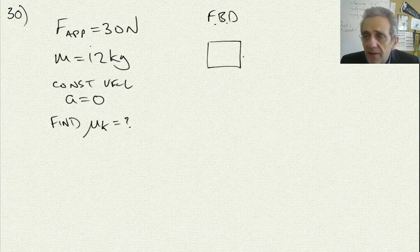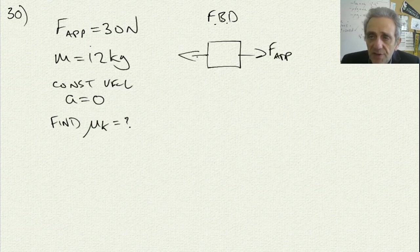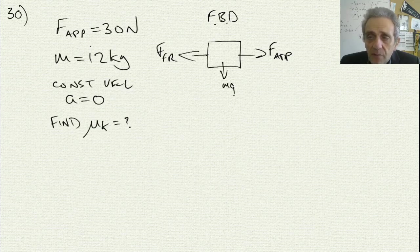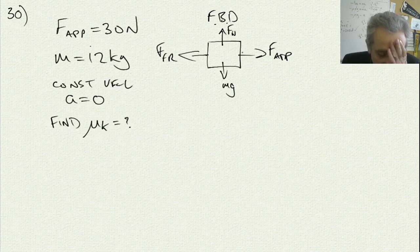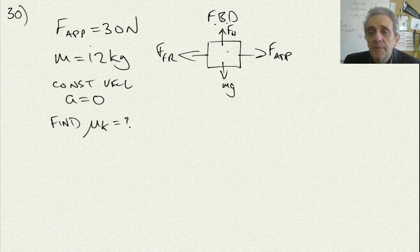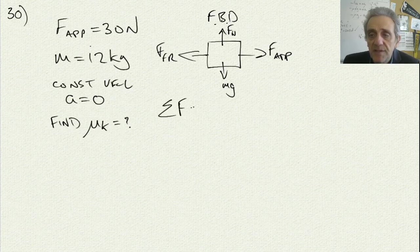So we draw the free body diagram. Here's our applied force, here is our friction force. We do have gravity, but it is negated by a normal force acting up, so these vertical forces cancel out. The only forces we're concerned about are the horizontal forces. Let's write down our dynamics equation: summation of the forces is equal to F net.